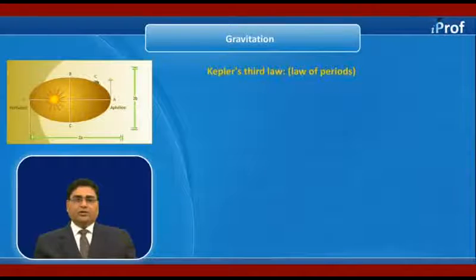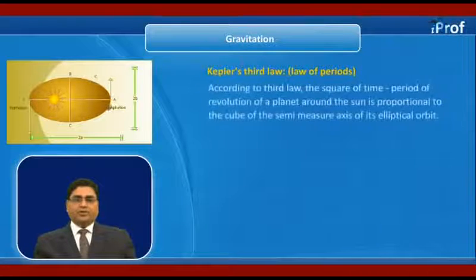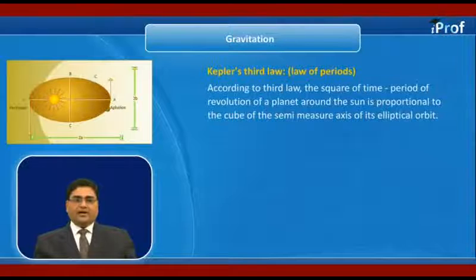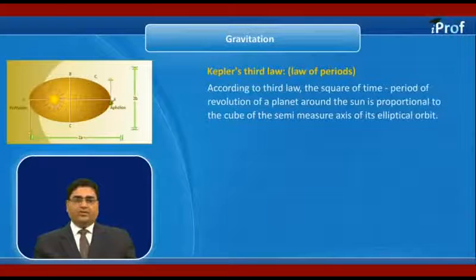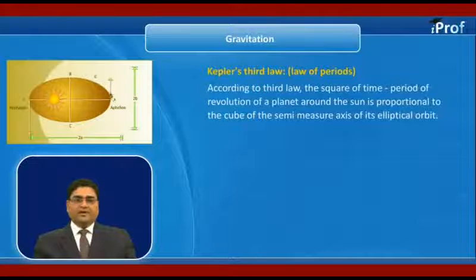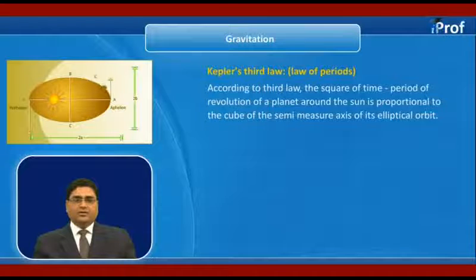Now, Kepler's third law or law of periods. According to third law, the square of the time period of revolution of a planet around the Sun is proportional to the cube of the semi-major axis of its elliptical orbit, so T square proportional to A cube.